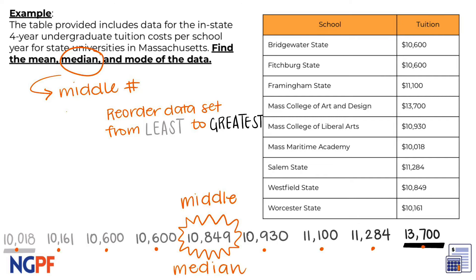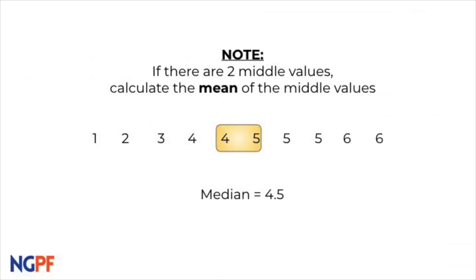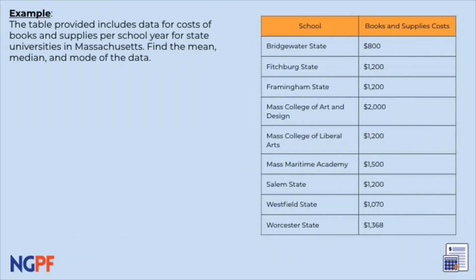Quick note: if there are an even number of data points and you have two middle values, go ahead and calculate the mean of the two middle numbers and that result will be your median. It's your turn again. What is the median of the cost for books and supplies at these nine schools?